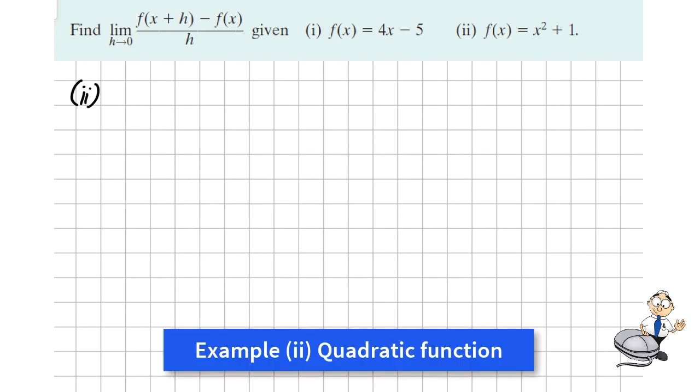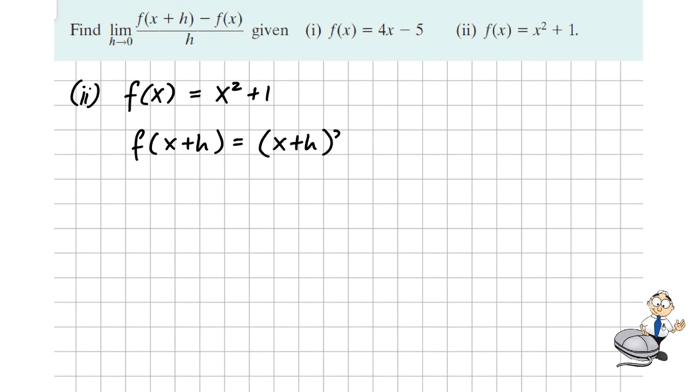Our second example is a quadratic example. If f of x is equal to x squared plus 1, we want to work out f of x plus h. So substitute x with x plus h. We multiply x plus h by x plus h.